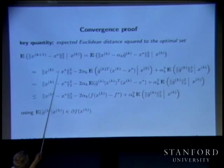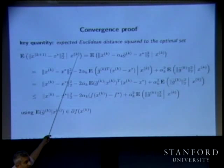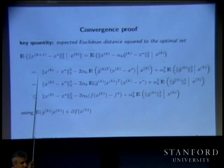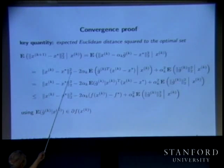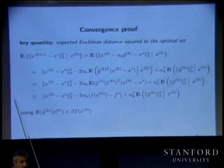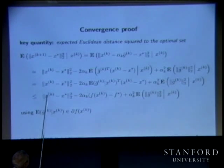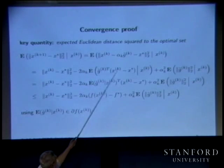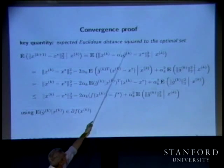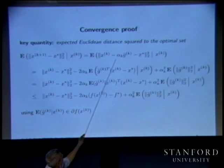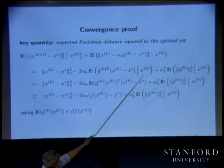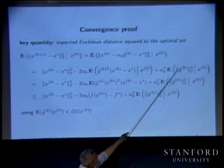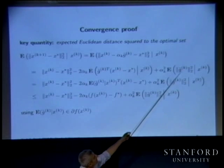This is conditioned on x_k, so x_k conditioned on x_k is just x_k — you lose the conditional expectation there. You get two alpha times the conditional expectation of the cross product, and the last term is alpha squared times the conditional expectation of the noisy subgradient squared given x_k — we leave that alone.